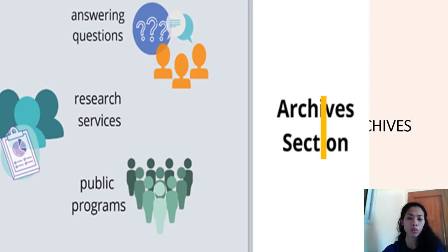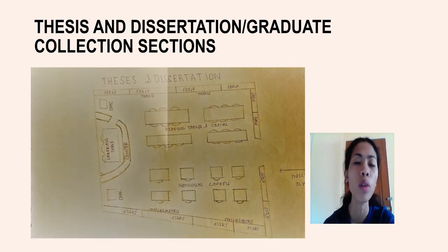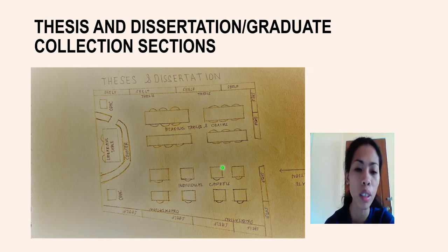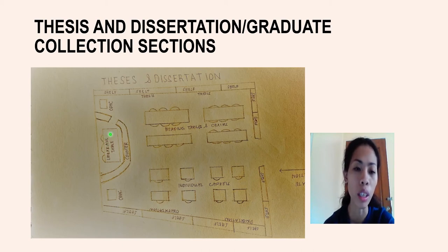The thesis and dissertation or graduate collection section involves collections for graduate students such as studies, theses, and dissertations. Every side of the room includes these collections, and there is a reading area with large tables, chairs, and individual carrels. There is a counter where you can ask librarians or personnel for assistance, and an OPAC on the side so you can search on your own for the information you need.